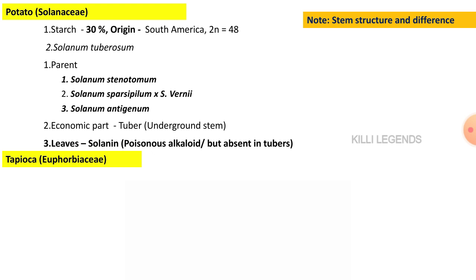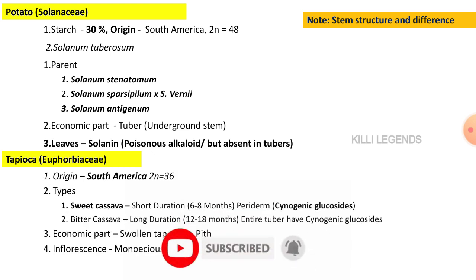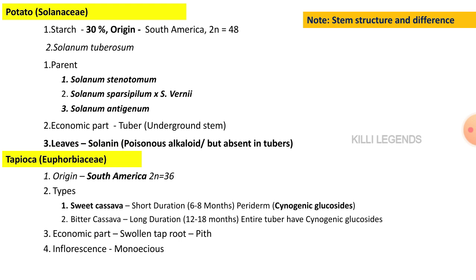Cassava is an important industrial crop belonging to the family Euphorbiaceae, with chromosome number 2n equal to 36. Its center of origin is South America. There are two types: sweet cassava and bitter cassava. Sweet cassava is used as a commercial and consumable vegetable. The outer pit contains cyanogenic glycosides which are hazardous to human health. In bitter cassava, the entire tuber is full of glycosides. For industrial purposes, the glycosides are removed. The economic part is the swelling tap root, which is an undergone stem modification.